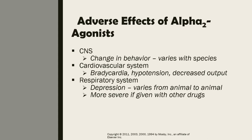The adverse effects of alpha-2 agonists include: in the CNS, a change in behavior that varies with the species, though sometimes you cannot notice this because the animal is sedated. For the cardiovascular system, there is bradycardia as a long-term effect, as well as hypotension and decreased cardiac output. For the respiratory system, there is respiratory depression, which is normal for most anesthetics, and it could be more severe if given with other drugs.